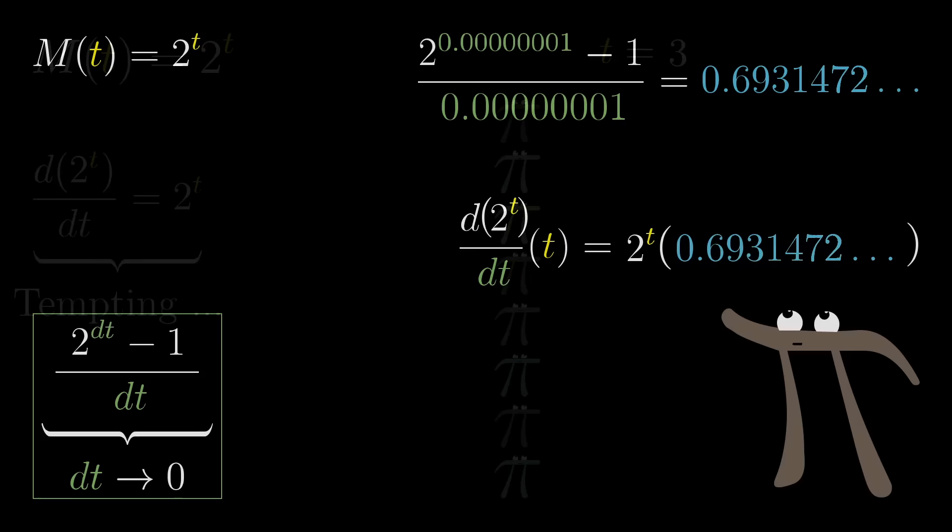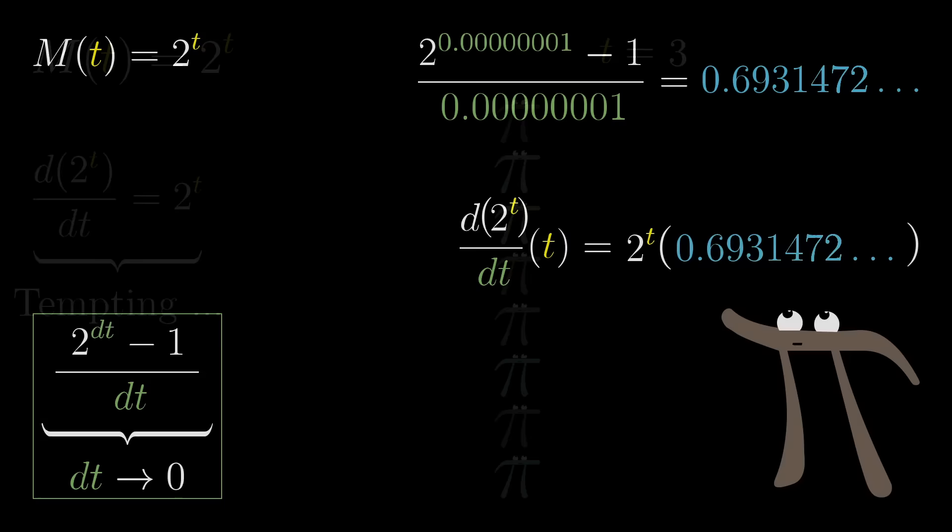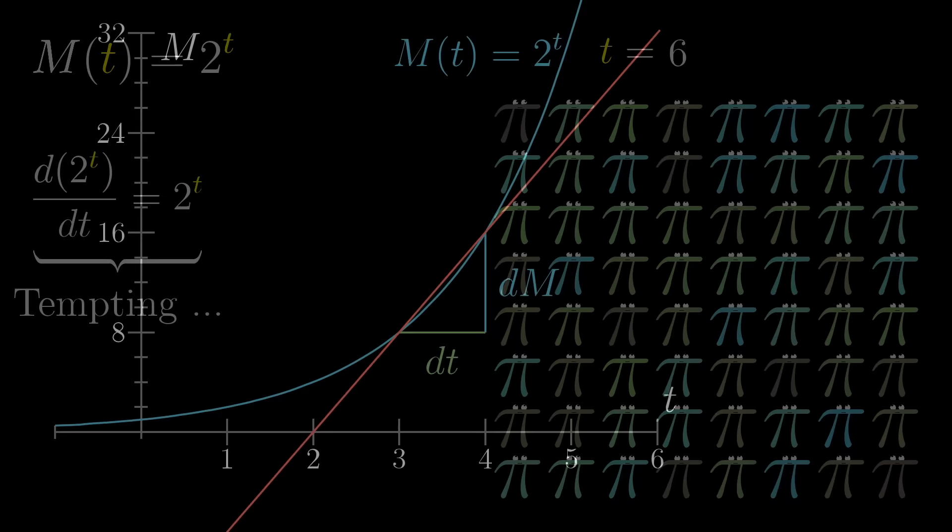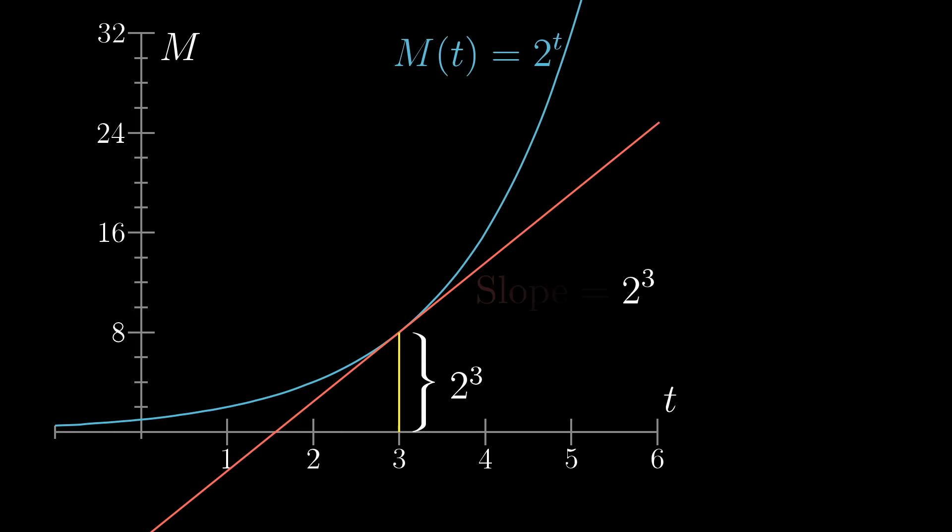And that should kind of make sense, because earlier it felt like the derivative for 2 to the t should be itself, at least when we were looking at changes over the course of a full day. And evidently, the rate of change for this function over much smaller timescales is not quite equal to itself, but it's proportional to itself, with this very peculiar proportionality constant of 0.6931.